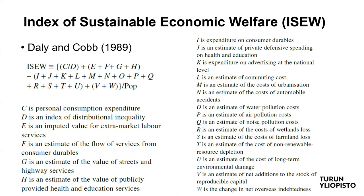On this slide is the formula for how the ISEW is computed and what factors it takes into account. There is not only personal consumption expenditure, but also an index of distributional inequality. There are a large number of factors included, such as health and education. Components E, F, G, and H are taken into account with a positive sign: E represents extra-market labour services, F is the flow of services from consumer durables, G is the value of streets and highway services, and H is health and education services.